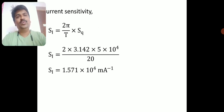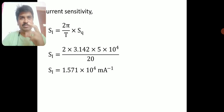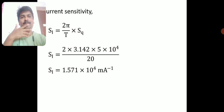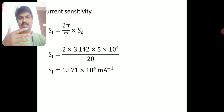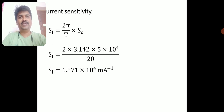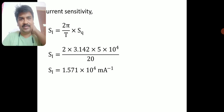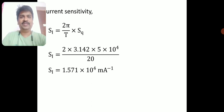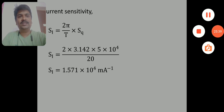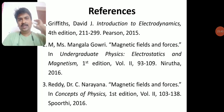Current sensitivity is related to charge sensitivity by: current sensitivity = (2π/T) × charge sensitivity. Substituting T = 20 and charge sensitivity = 5 × 10⁴: current sensitivity = 2 × 3.142 × 5 × 10⁴ / 20 = 1.571 × 10⁴ meter per ampere. The unit for current sensitivity is meter per ampere.